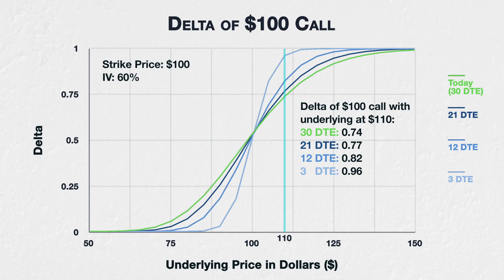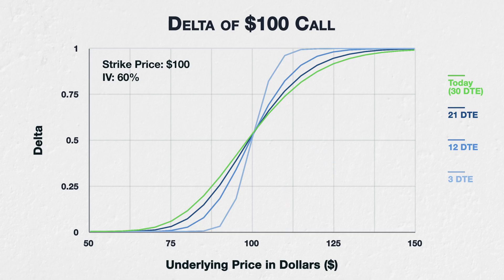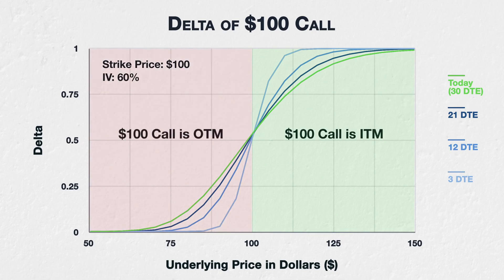You can see by looking at the chart that if we were looking at the same option with the underlying price sitting at $90 instead, leaving the $100 call out of the money, the option deltas would approach 0 as time passed. The more time left until expiry, or the higher the DTE, the further out of the money the option has to be for the delta to get close to 0. A delta of close to 0 implies that it's almost certain that the option will expire out of the money, and the more time left until an option expires, the more time is left for the underlying price to move, so the further out of the money an option has to be for there to be almost no chance of it becoming in the money at expiry.